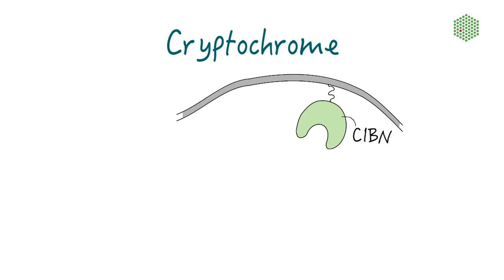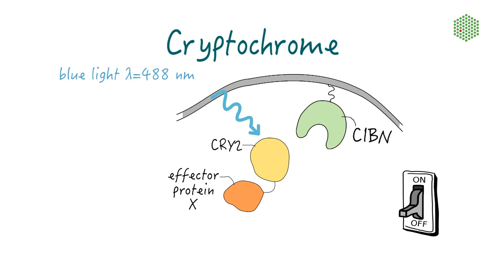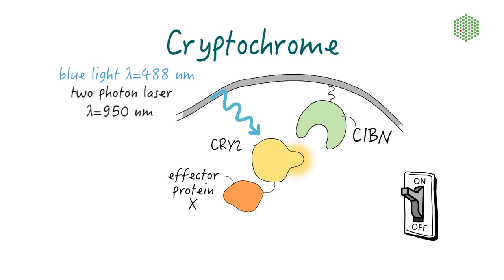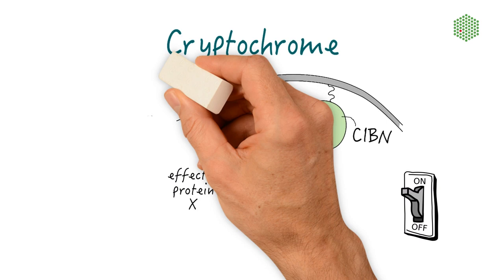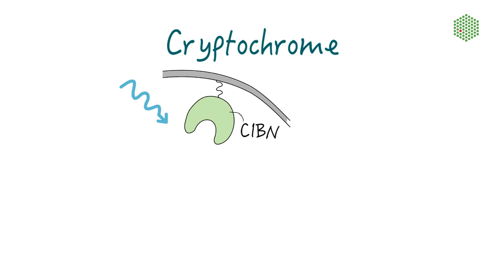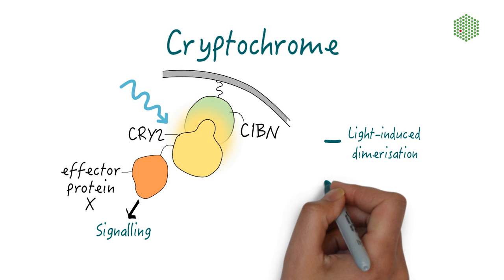We can activate Cry2 using blue light with a wavelength of 488 nm. To achieve more localized illumination and activation, we can also use a multi-photon laser light with a wavelength of 950 nm. Upon light exposure, Cry2 undergoes a conformational change and is bound by the membrane-anchored N-terminal domain of the protein Sib1, called Sibn. The light-induced dimerization of Cry2 and Sibn causes the recruitment of Cry2 fusion protein to the membrane, where the effector protein can pursue its function.